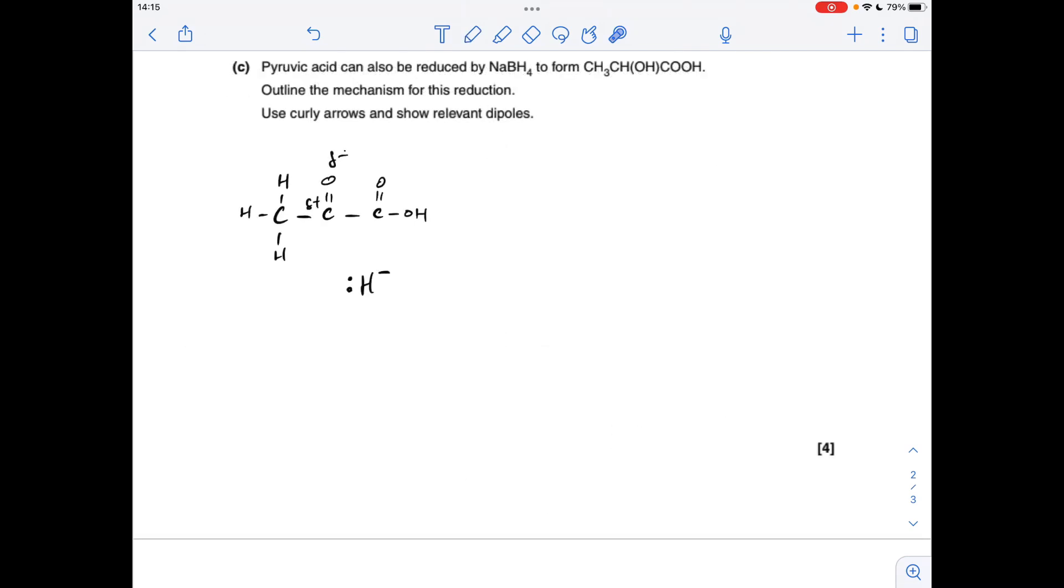So moving on to the mechanism now, so I've got our displayed formula there for the pyruvic acid. We've got the reducing agent represented as an H- ion, a hydride ion. So the first thing we need to do is take a curly arrow from the pair of electrons on the H- ion to that slightly positive carbon.